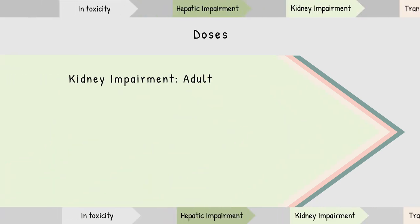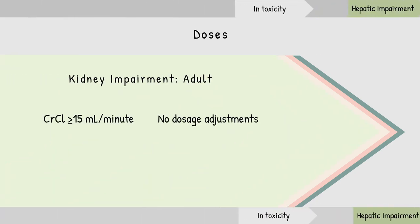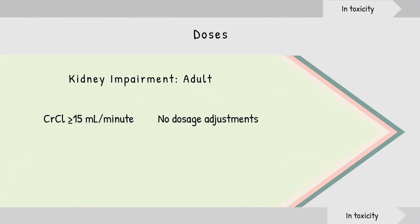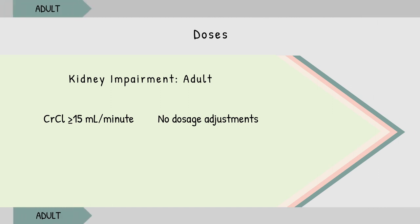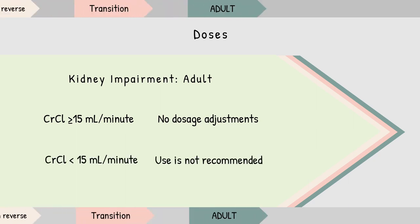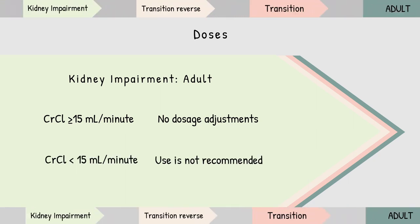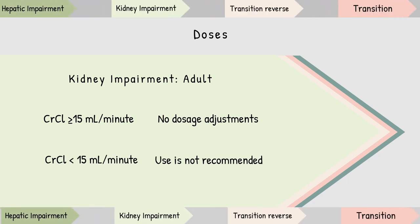In kidney impairment, if creatinine clearance (CrCl) is greater than or equal to 15 mL/min, no dosage adjustments are needed. However, if creatinine clearance is less than 15 mL/min, use is not recommended.